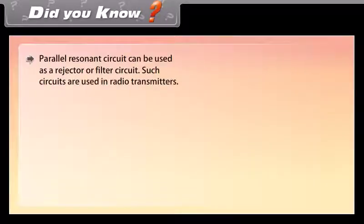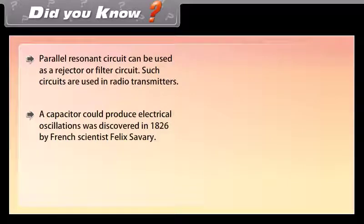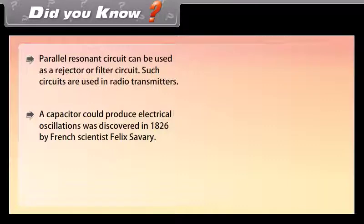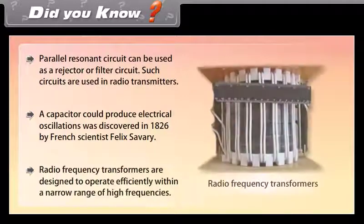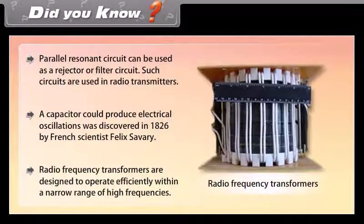Did you know? Parallel resonant circuits can be used as rejector or filter circuits, used in radio transmitters. A capacitor producing electrical oscillations was discovered in 1826 by French scientist Félix Savary. Radio frequency transformers are designed to operate efficiently within a narrow range of high frequencies.